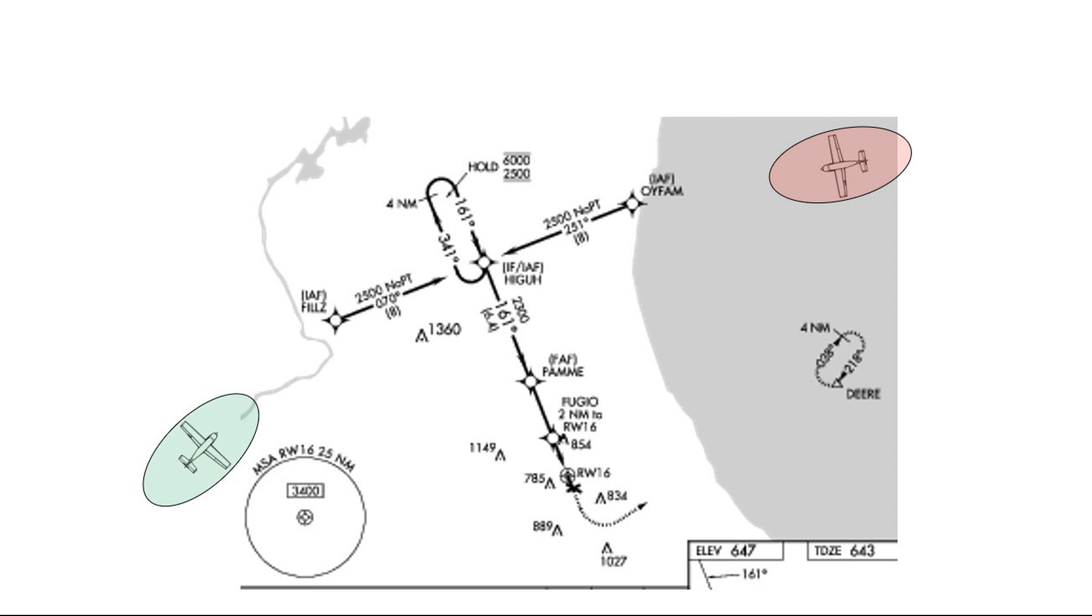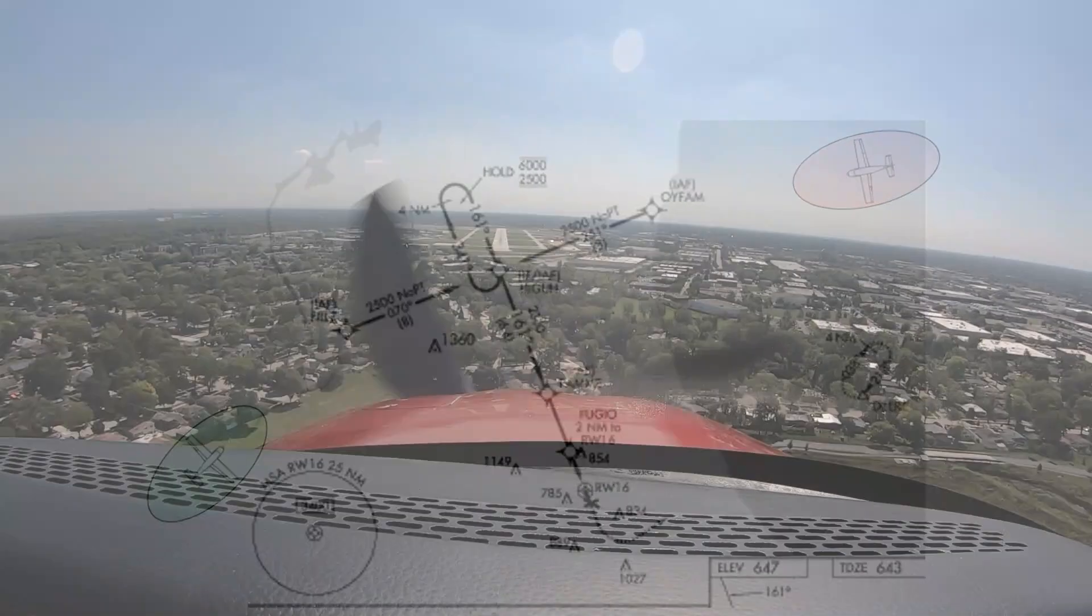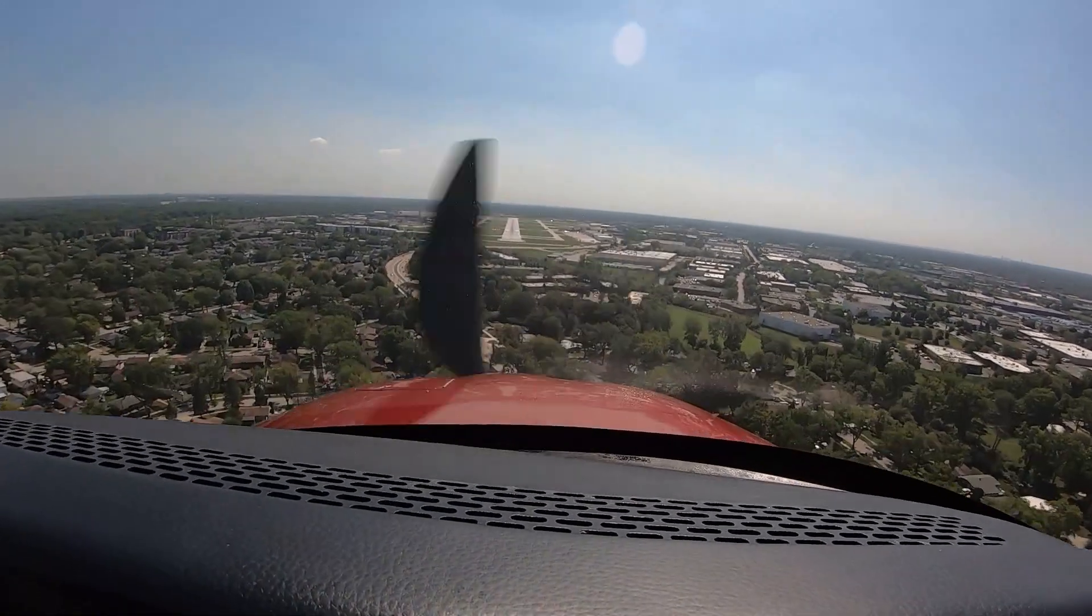[ATC Recording] 7-0 Tengu, you know what? I'm going to declare an emergency for you. Say again, nature of emergency, and souls and fuel on board. 7-0 Tengu, roger, and I understand you want to go direct to the field. 7-0 Tengu, turn left, right to the field. The center maintained 2,500. 3-0 Delta, cancel approach clearance. We've got to make room for this emergency coming in. Maintain 2,500, and turn right, right turn heading 270.